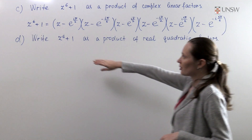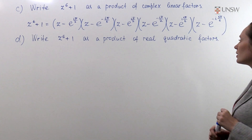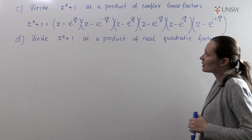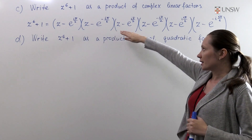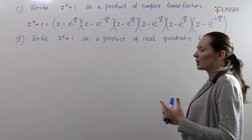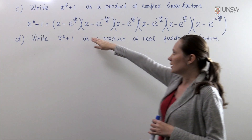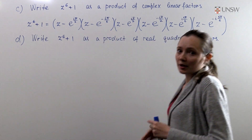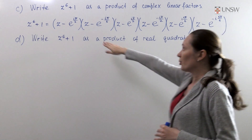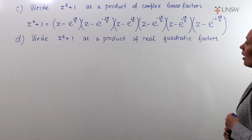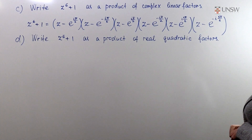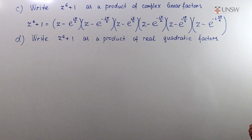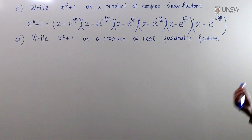We can also write this polynomial as a product of real quadratic factors. To do this it's convenient to write all complex linear factors of this polynomial in an order so that complex conjugate numbers will be next to each other — for example, π/6 and minus π/6. The product of these two brackets will be a quadratic factor with real coefficients.